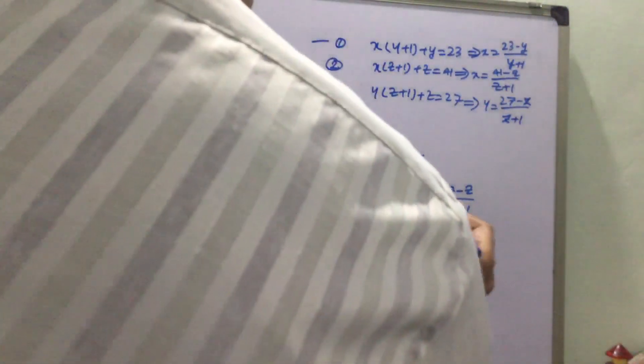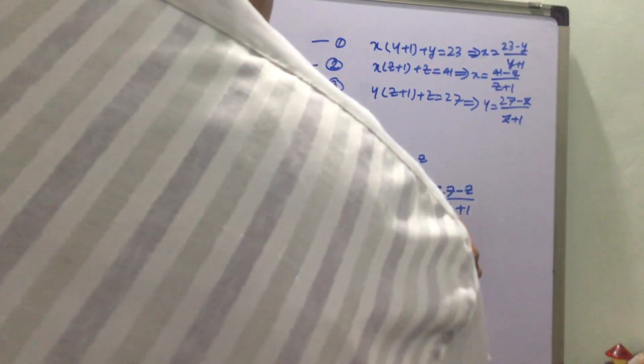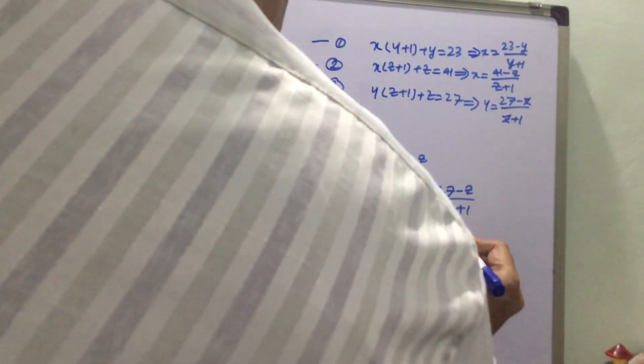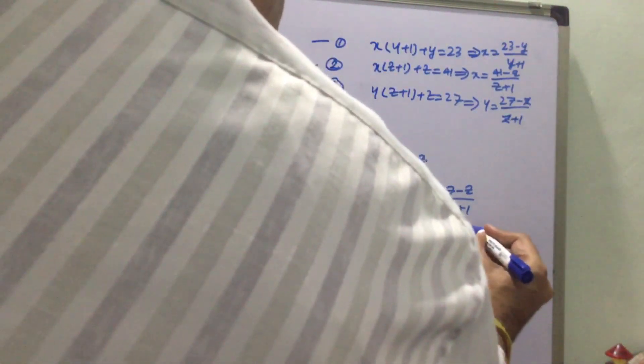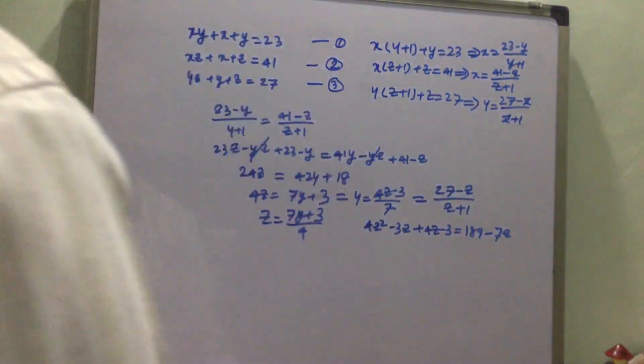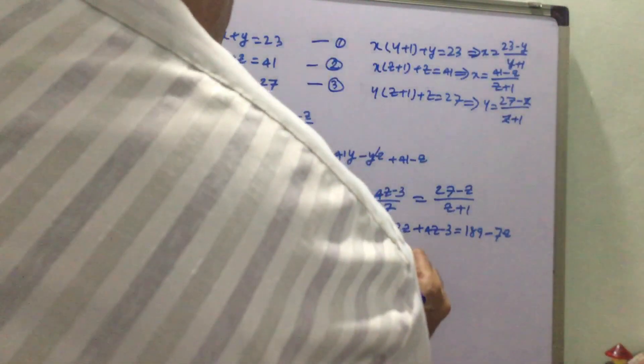Cross-multiplying gives 4z² - 3z + 4z - 3 = 189 - 7z. Expanding and moving all terms to one side, we get 4z² + z + 7z - 3 - 189 = 0, which simplifies to 4z² + 8z - 192 = 0.